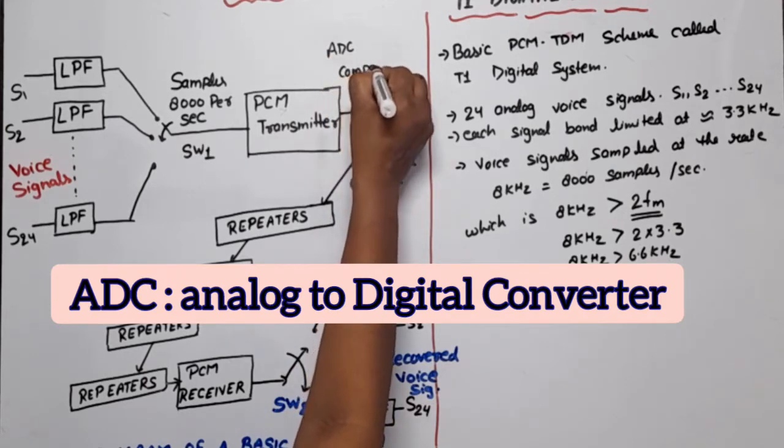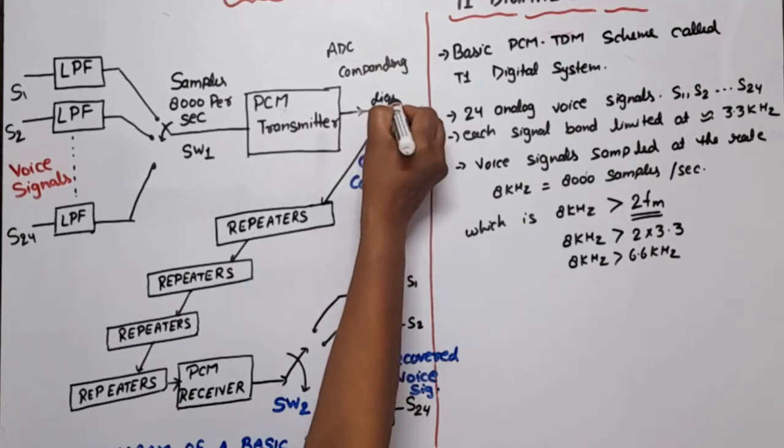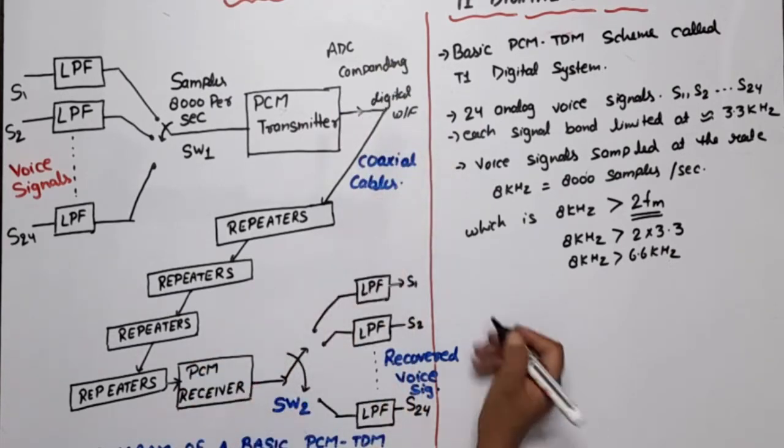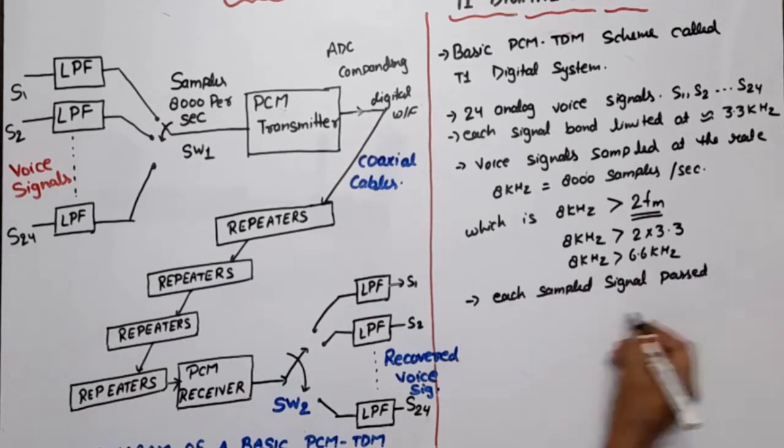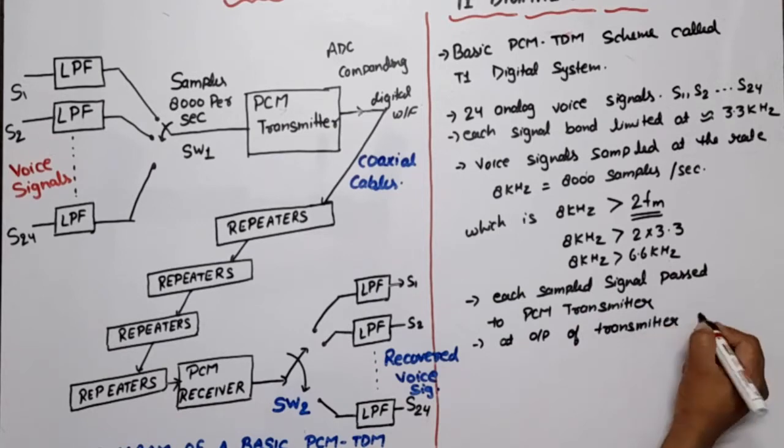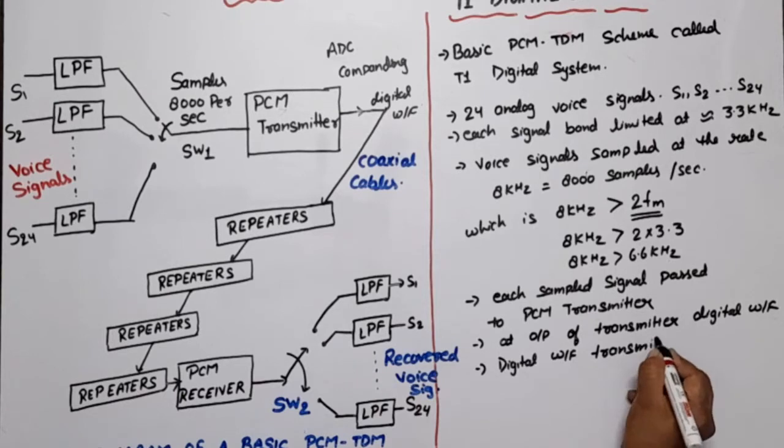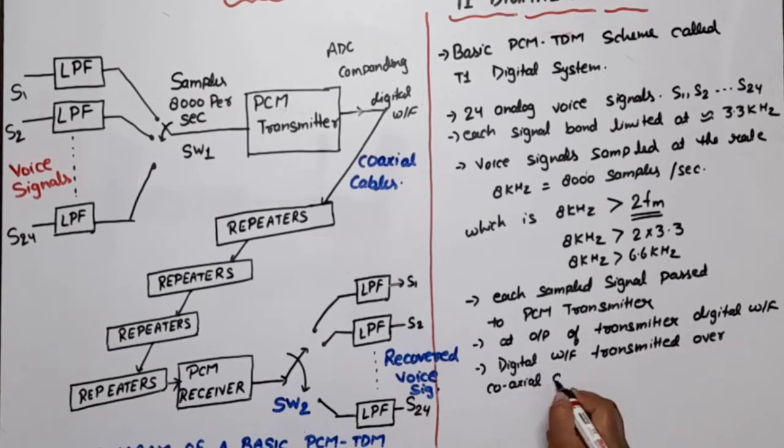The PCM transmitter converts each sampled signal into digital by using analog to digital conversion. Here it uses companding. The output is a digital waveform, and this digital waveform is transmitted through the coaxial cable.